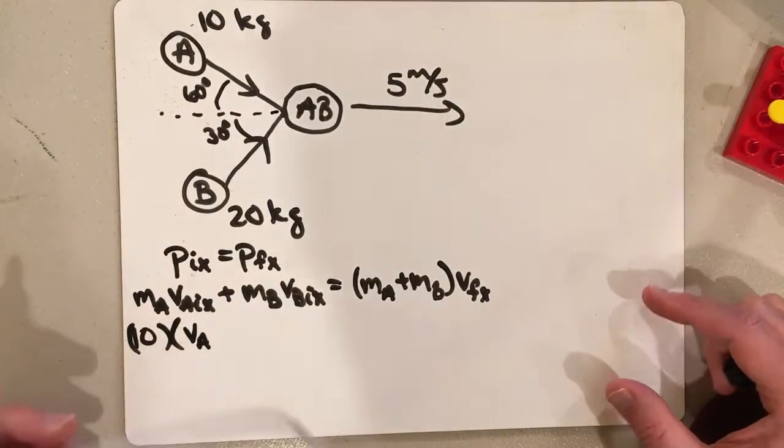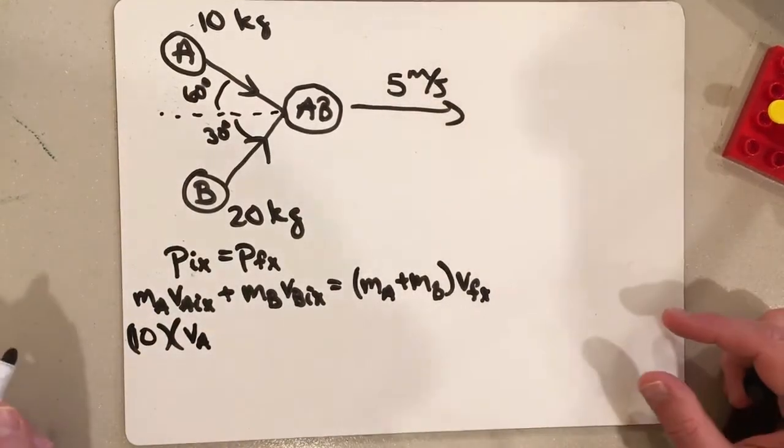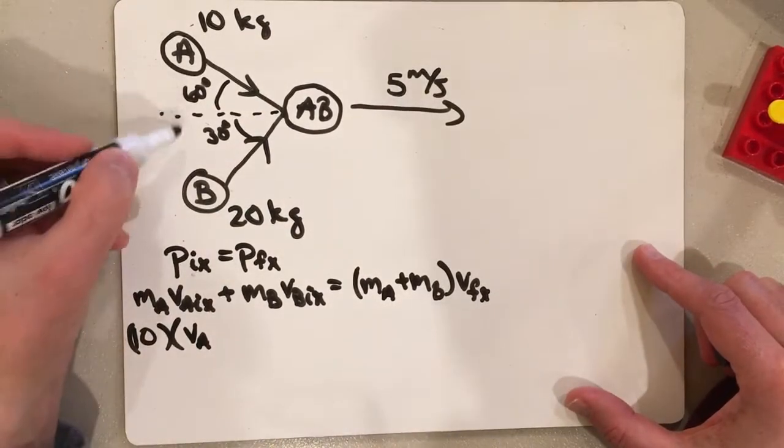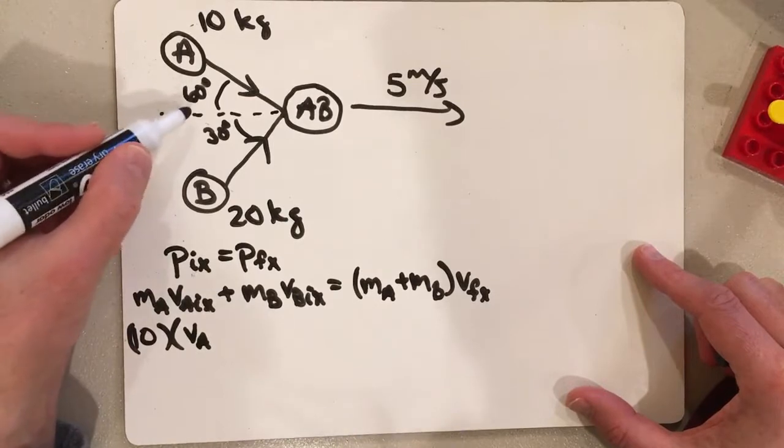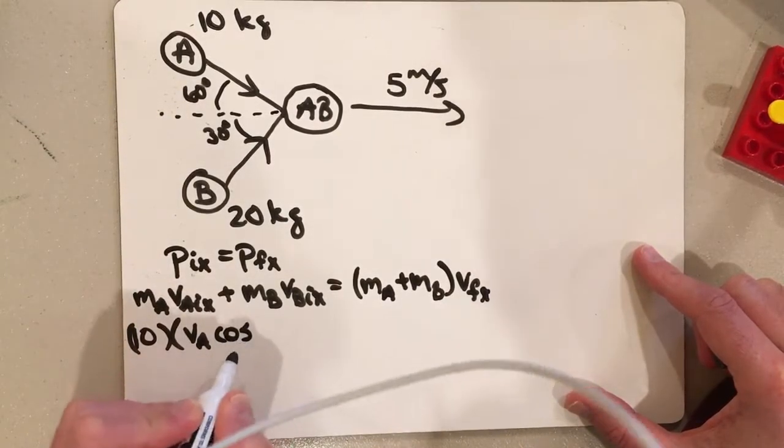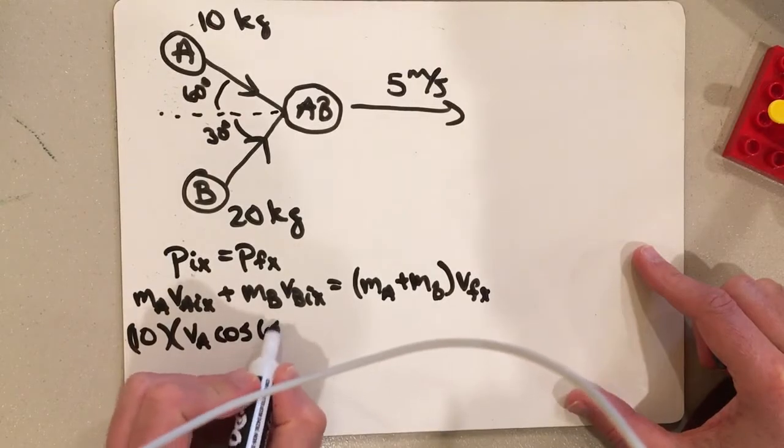I'm just going to call it VA. And then since this angle, I want the X component, and since the angle is relative to the horizontal, that's going to be the cosine, cosine of 60 degrees.